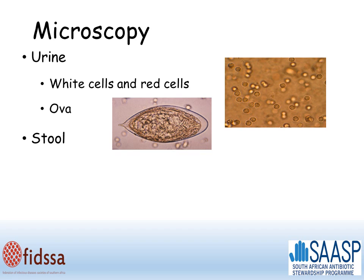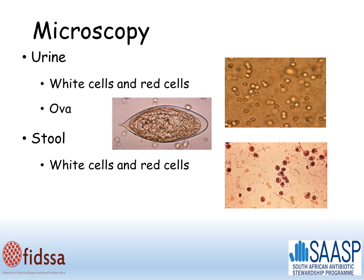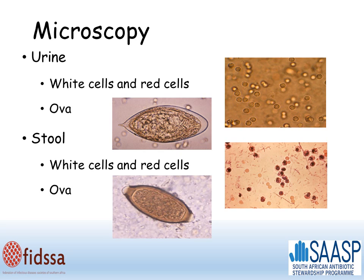Similarly, when you send a stool specimen to the lab, the first thing that happens is microscopy. And again, you may see white or red cells, and you might see ova, such as this trichuris egg.